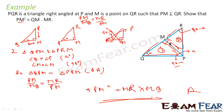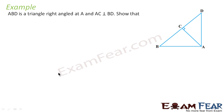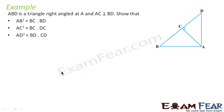So we first drew the line, found which two triangles we had to make similar, made them similar, and got the result. Let's take one more example. Triangle ABD has a right angle at A, and AC is perpendicular to BD. We have to prove that AB² equals BC into BD.